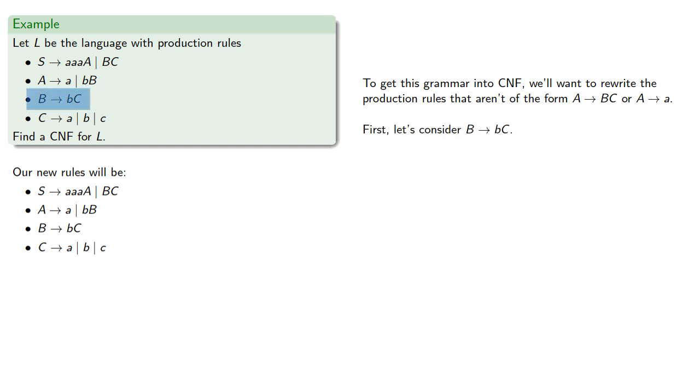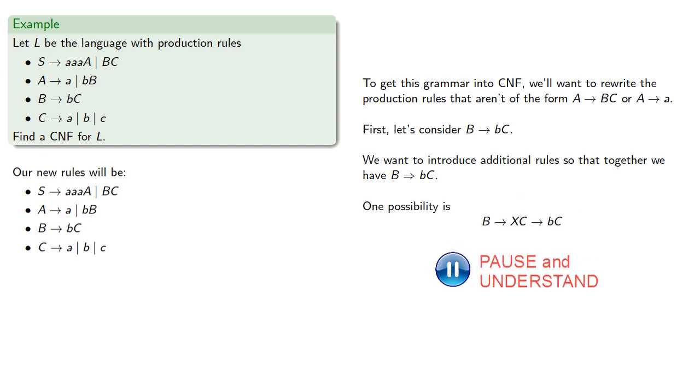First, let's consider this rule B produces BC, that's a terminal followed by a variable. And the key is we want to introduce additional rules so that together we have B produces BC. So one possibility is, and this requires us to introduce two new rules. First, B produces XC where X is a new variable, and then we have to figure out what to do with X. Well, X produces b, which is our terminal.